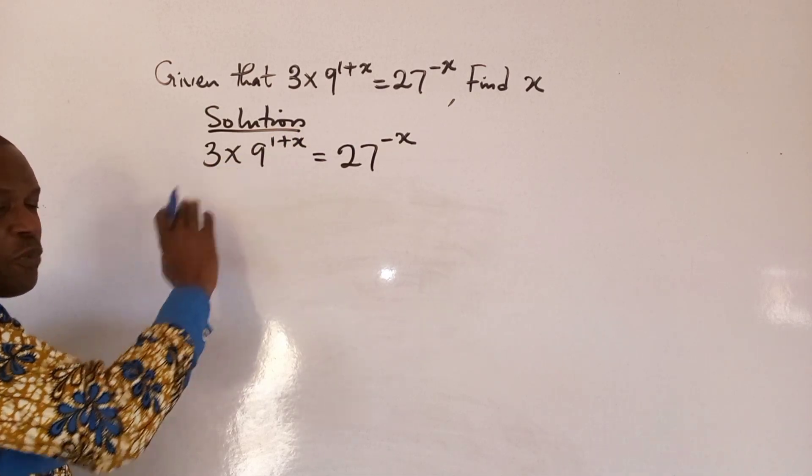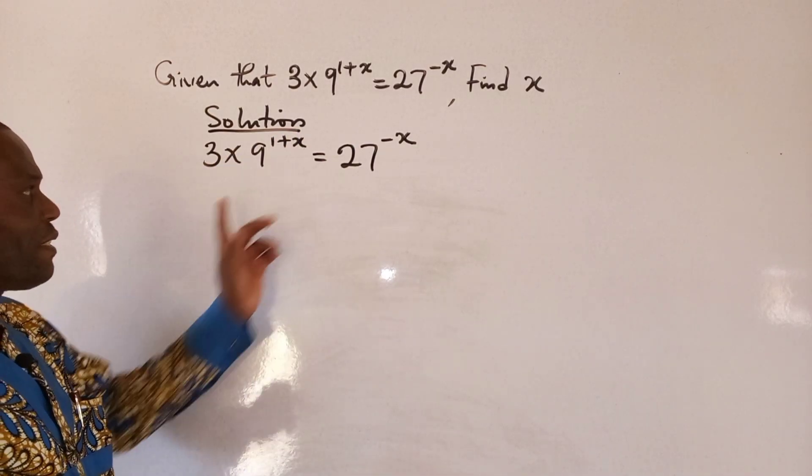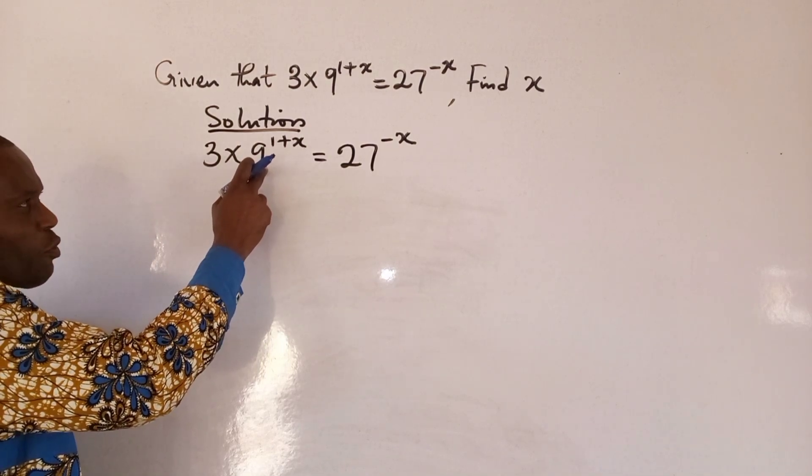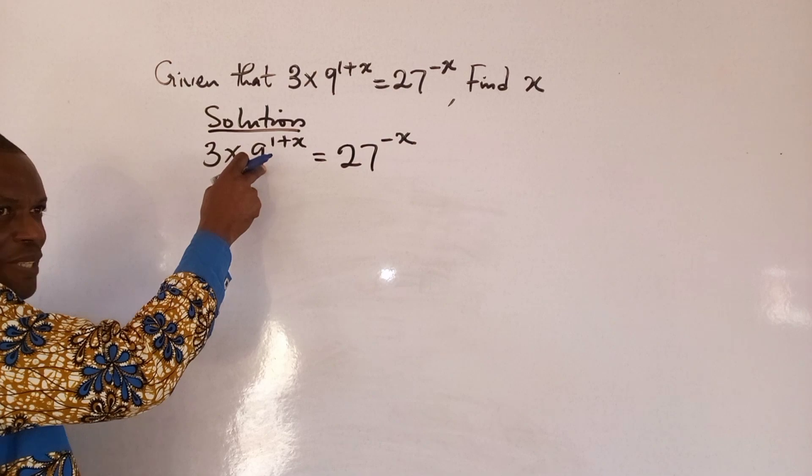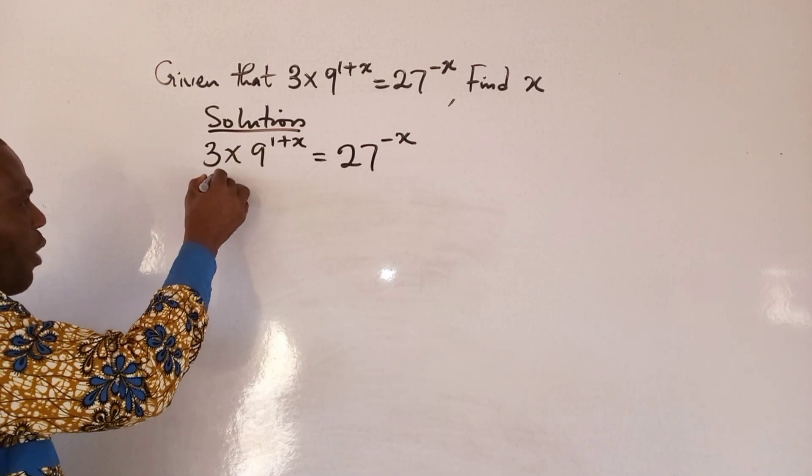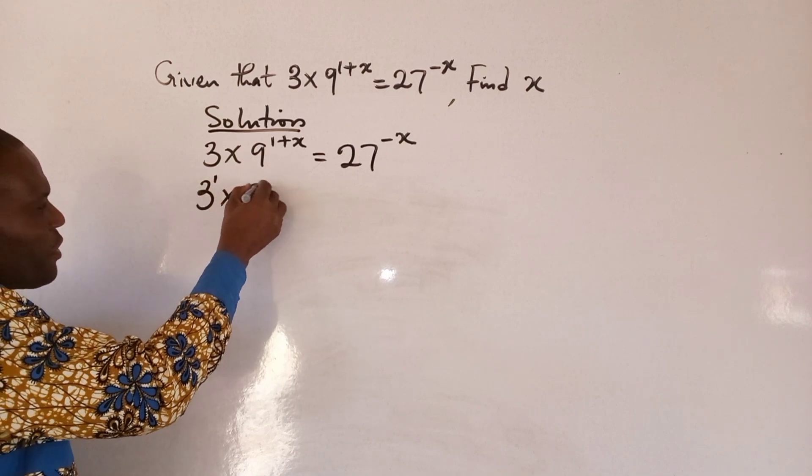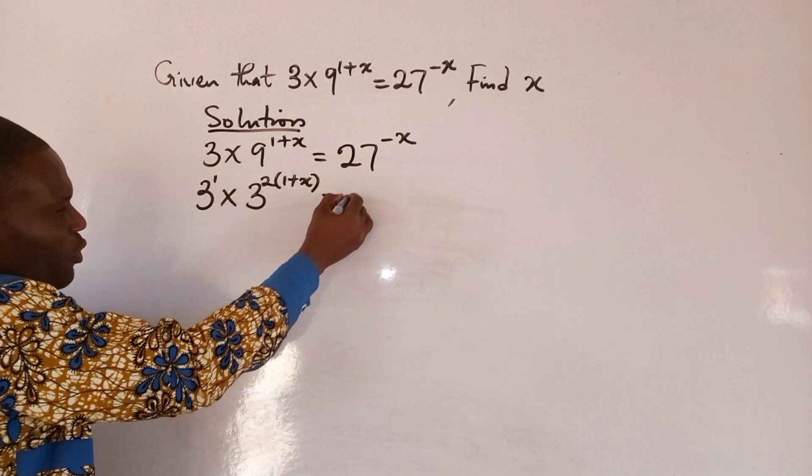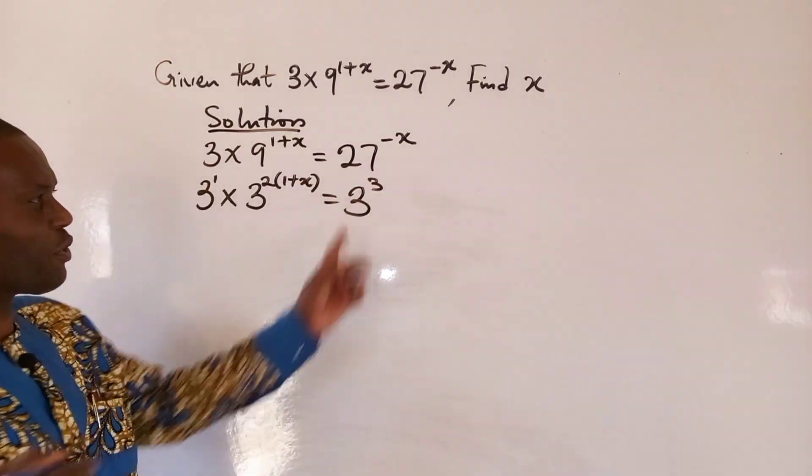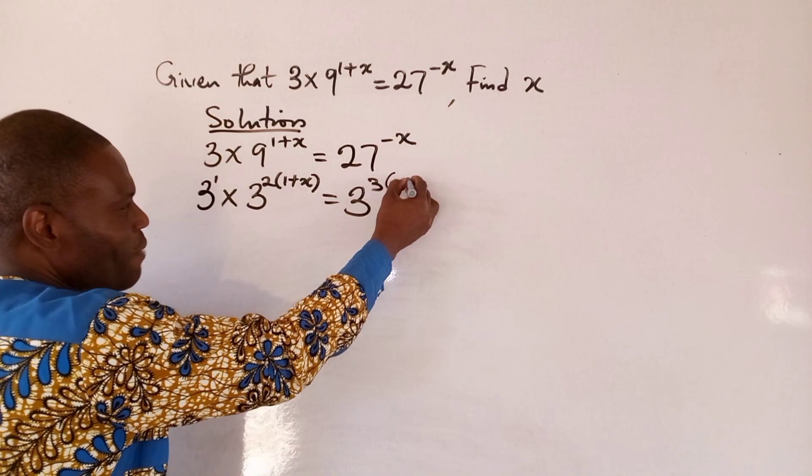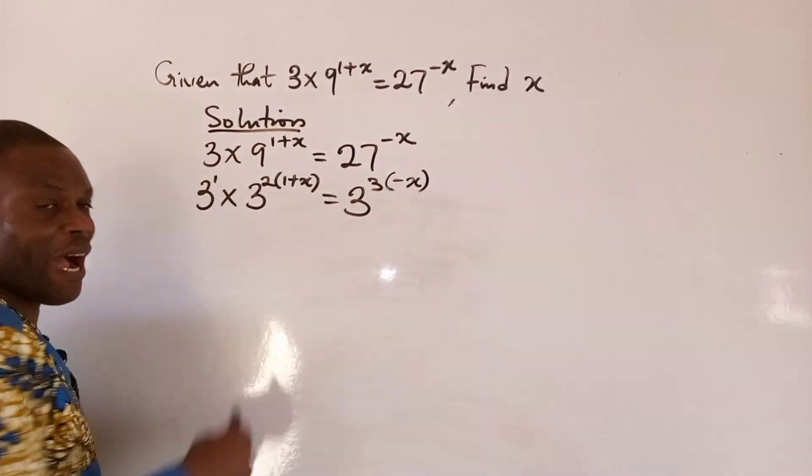So, at this point, we're going to be using the law of indices. Because the base, we have to convert this to 3 raised to power 2 because this value 9 is 3 raised to power 2, which is 9. So, here is 3 raised to power 1 times 3 raised to power 2, open bracket 1 plus x equals to 3 raised to power 3 because 3 times 3 times 3 will give us 27. So, at this point, we have minus x, which is the power of 27.